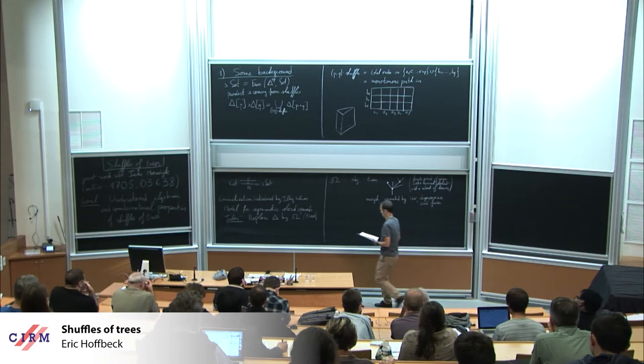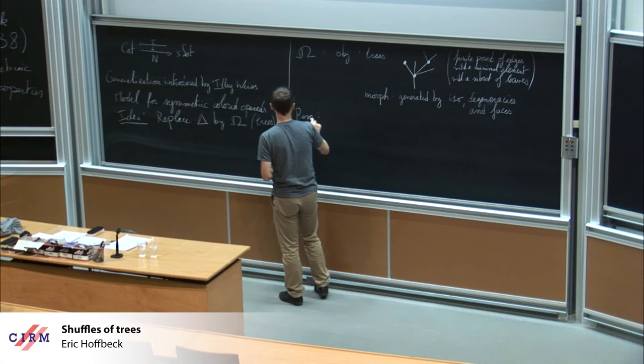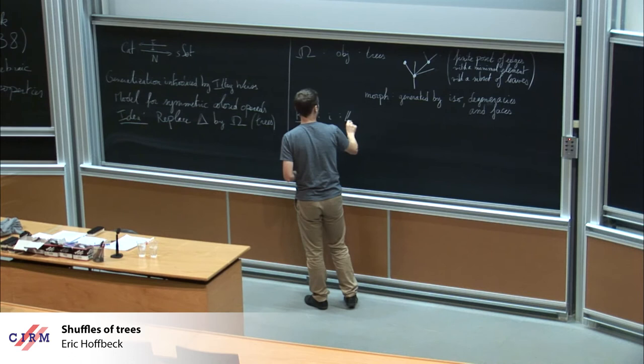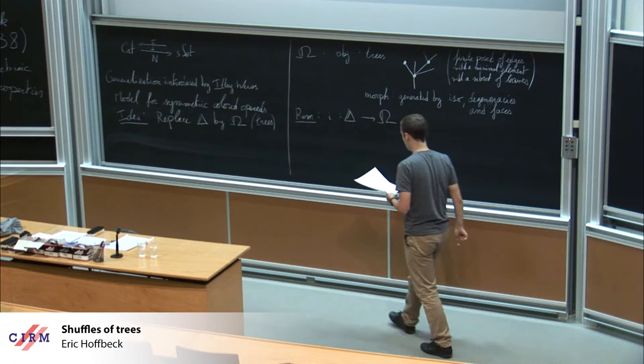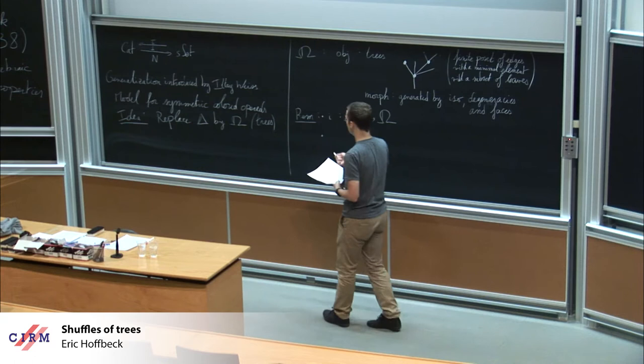This is the category of trees needed for dendroidal sets. One very easy remark: you have an embedding of delta into omega, so when we go to pre-sheaves you also get a map. That's one important point. Another important point: to make connections between these trees, maybe I should be a bit more specific. When I say it's a poset of edges, I can or should label these edges.